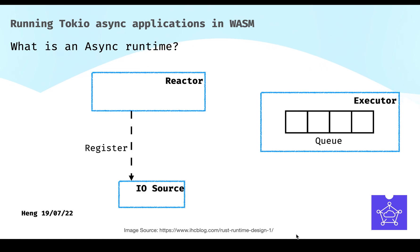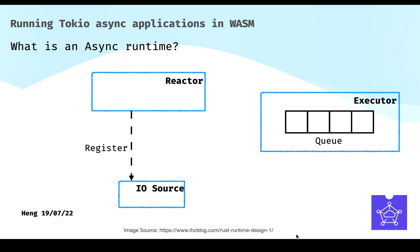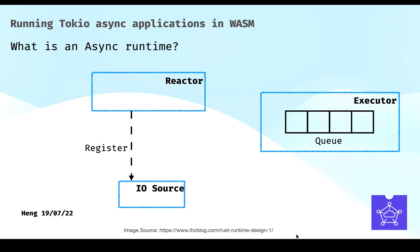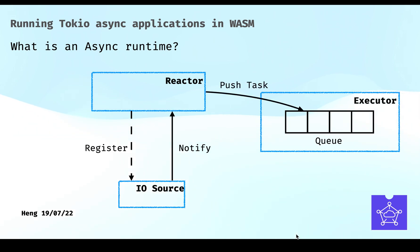A common design pattern we use to implement an Async Runtime is the reactor pattern. In short, when performing an I/O operation, we'll register the I/O source onto the reactor. When the I/O operation finishes, the reactor will be notified and send this task to the executor. The executor will poll these tasks one by one.